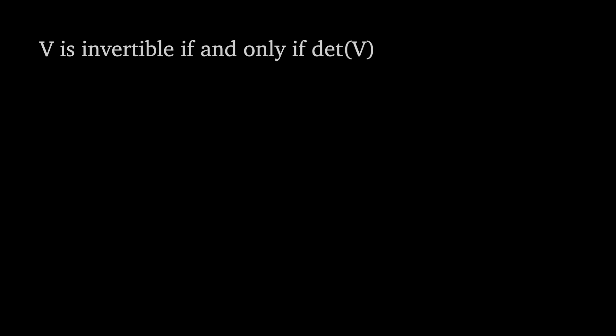Firstly the Vandermonde matrix V is invertible if and only if its determinant is not equal to 0. This is a standard result from linear algebra but before we go trying to calculate the determinant of V I should point out there's a particular form we want to aim for that's not obvious. The determinant of V is equal to the product of all x sub j minus x sub i where j is greater than i.